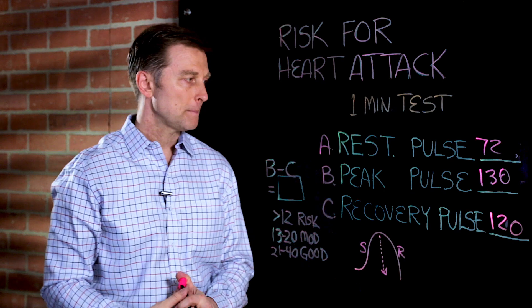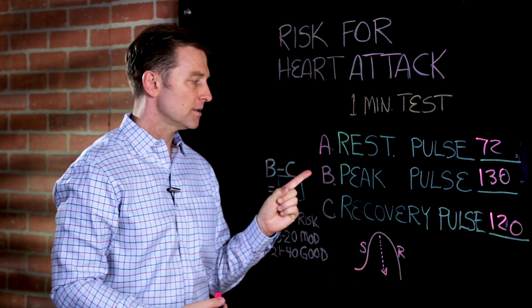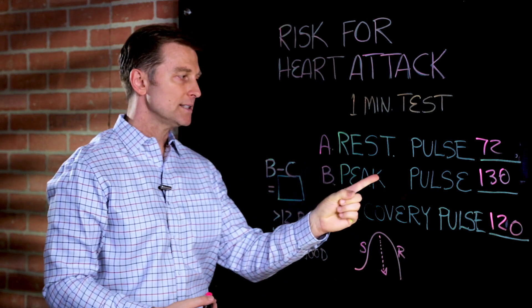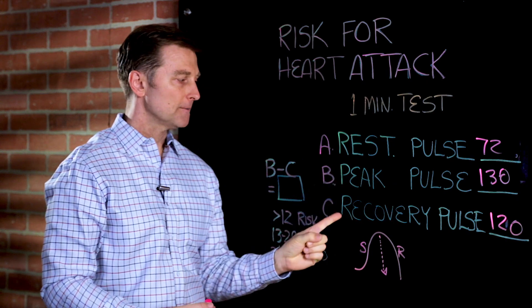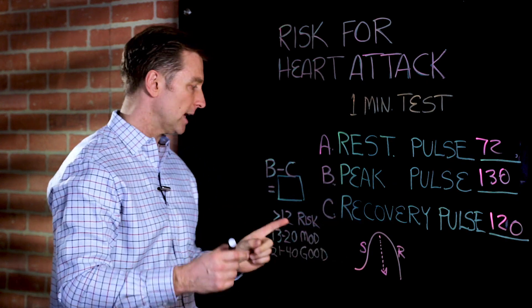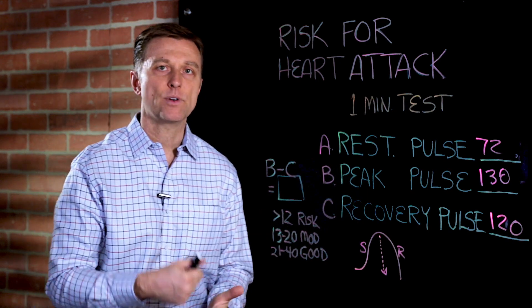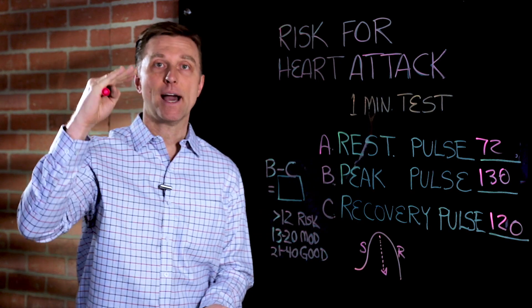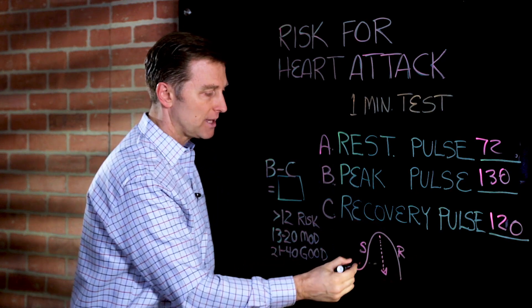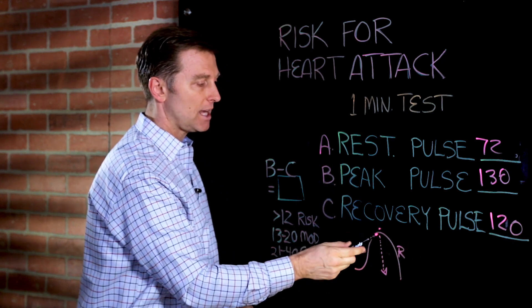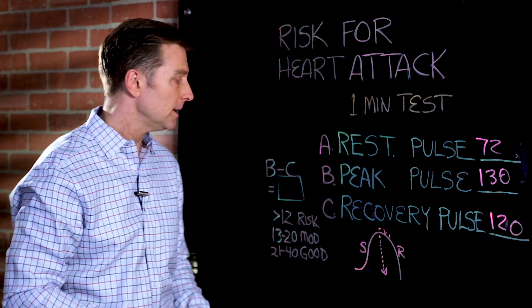Basically, what we do is we take the difference from B to C. We're subtracting the peak pulse rate from the recovery pulse rate after the workout, and it's going to give us a number. We're measuring how fast the pulse rate comes down from exercise. We spike the pulse rate, and then we see how fast it comes down.